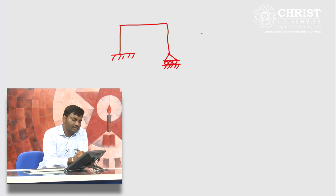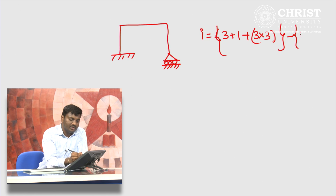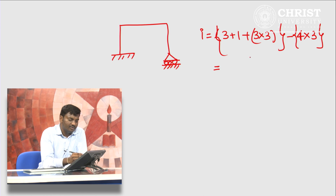The degree of static indeterminacy for this works out to be 3 + 1 = 4 support reactions, plus 3 members with 3 unknown internal forces each, minus available equations of equilibrium from 4 joints with 3 equations each. The degree of static indeterminacy works out to be 1. Now, how to make this structure statically determinate? That is, if I want to make this structure statically determinate, then I should make i equal to 0. Here we have i = 1, so we have to make it i = 0.